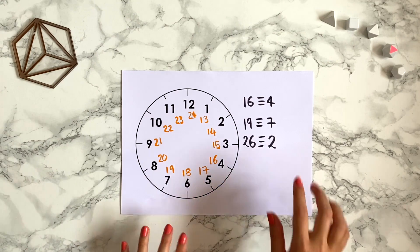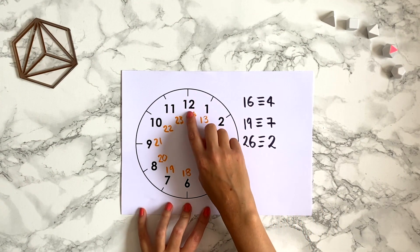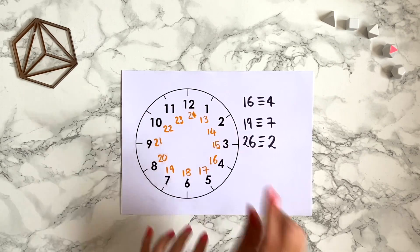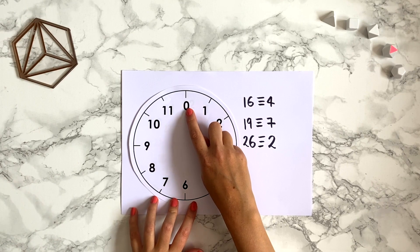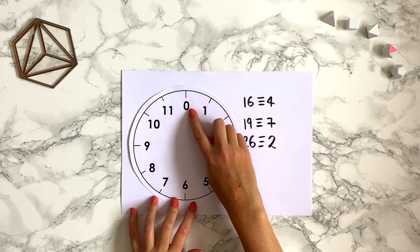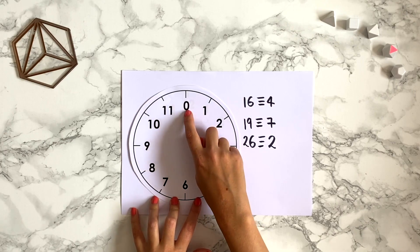One change we need to make in our mathematical time-telling world is we actually need to replace this number at the top, the 12, with a 0 like this. So in fact we actually say that 12 is congruent to 0, and also 24 would be congruent to 0, and in fact any multiple of 12 would be congruent to 0.